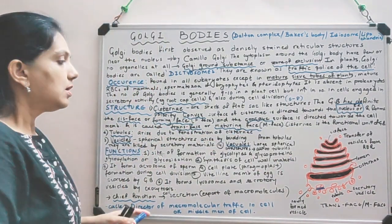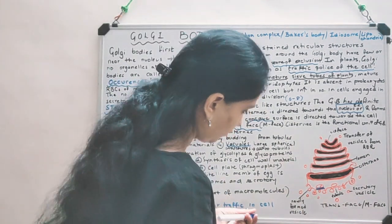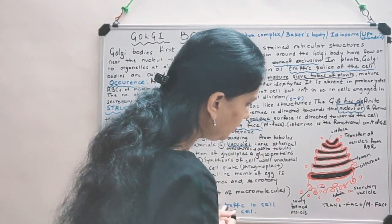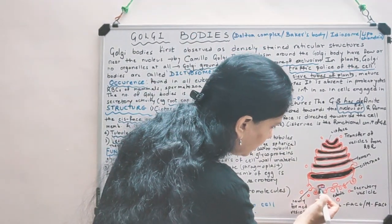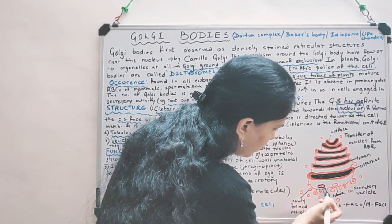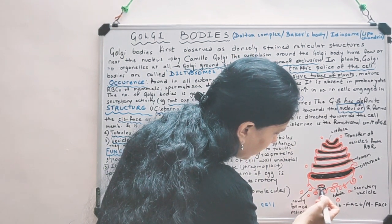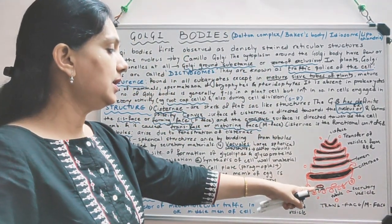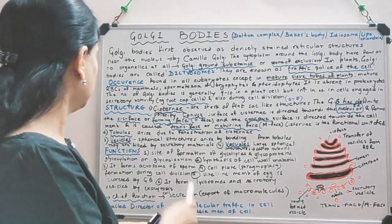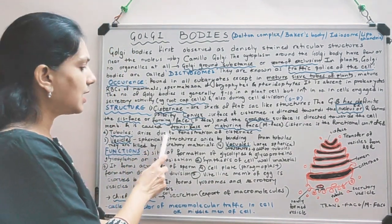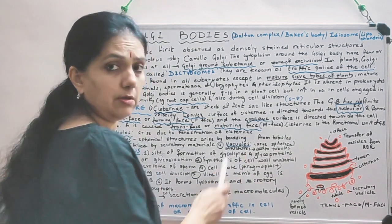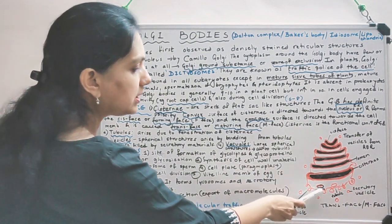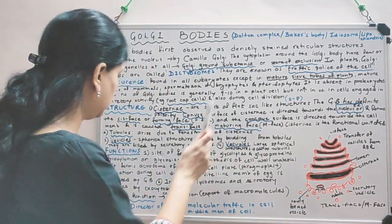Now, tubules. You can see the highlighted structure here. This is the cisternae and this portion is forming a tube-like structure. This is basically occurring due to fenestration. So tubules arise due to fenestration of cisternae. Fenestration means the opening part.